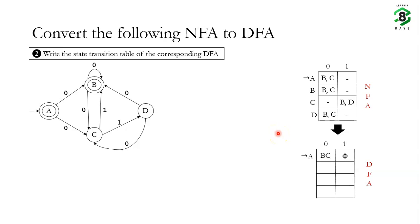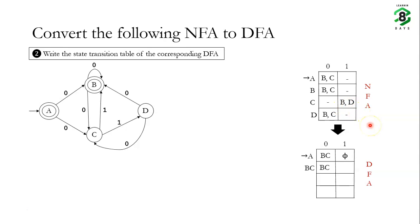Next we consider state BC. For input 0: in the NFA, state B on input 0 goes to B or C, and state C has no transition on input 0, so the DFA transitions from BC back to BC. For input 1: state B has no transition on input 1, but state C on input 1 goes to state B or state D. So we introduce a new DFA state BD, which is the transition from BC on input 1.